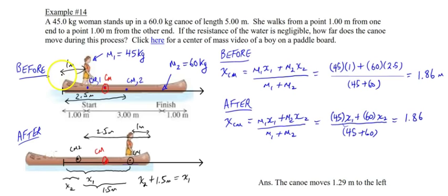So the difference, the distance between this center of mass and this center of mass, is always going to be 1.5 meters in the before and also in the after case.